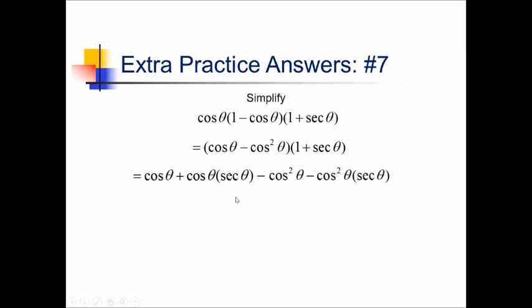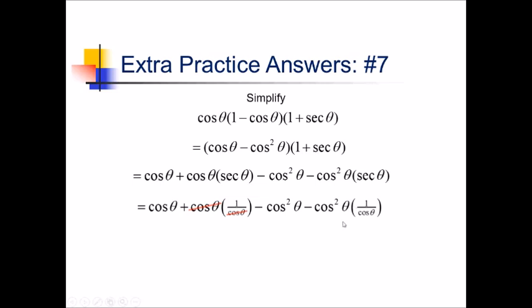There are a few different directions we could go — we could try combining like terms. But I notice that secant is 1 over cosine, so let me make those 1 over cosines and see if I can cancel a few things out. This cosine and this cosine cancel, leaving just 1 for that term. And over here, one of these cosines cancels with the other cosine, leaving just a regular cosine. So we've got cosine of theta plus 1 minus cosine squared minus cosine. The positive and negative cosine cancel, leaving us with just 1 minus cosine squared of theta.